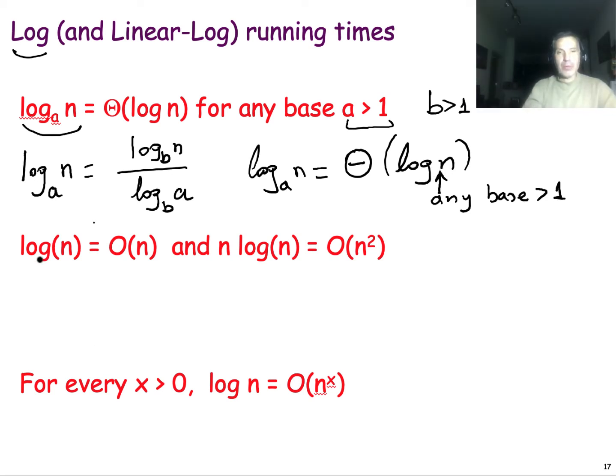The second property that I want you to remember from calculus is that logarithmic functions increase slower than linear functions. For instance, if we take the natural logarithm of n, that is smaller than n for any n that is greater or equal than 1. In general, we can write that a logarithmic function of n, independent of base, is asymptotically upper bounded by a linear function of n.